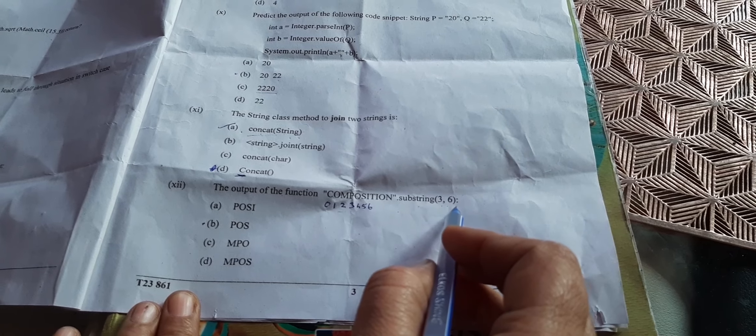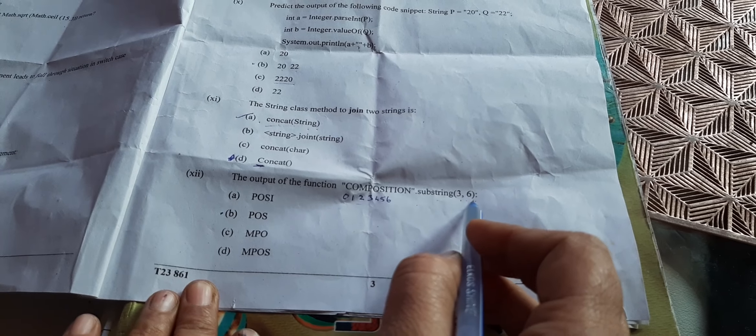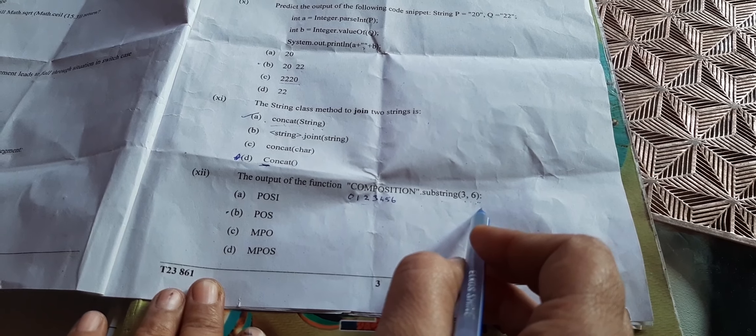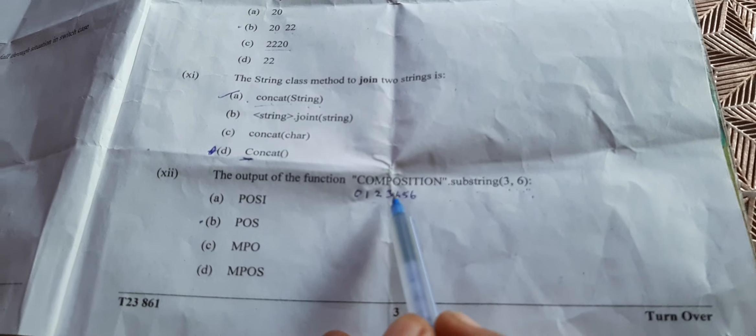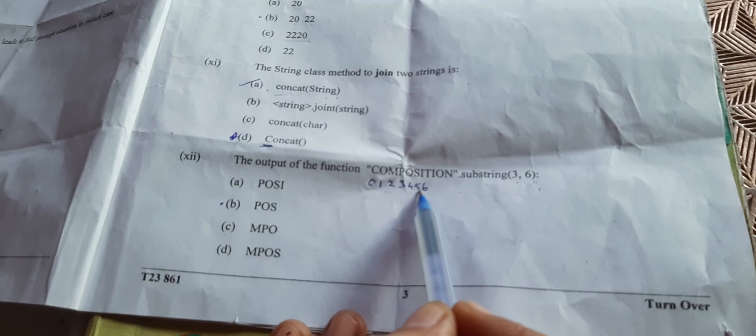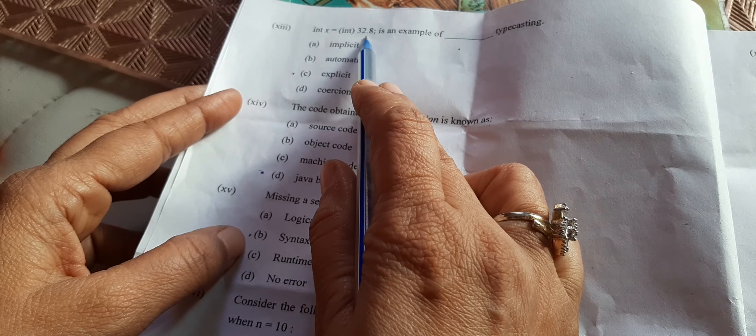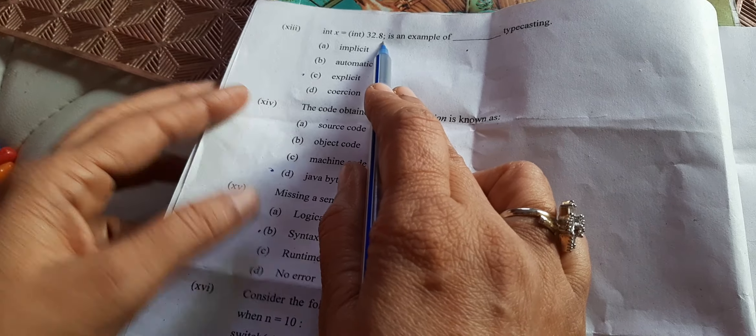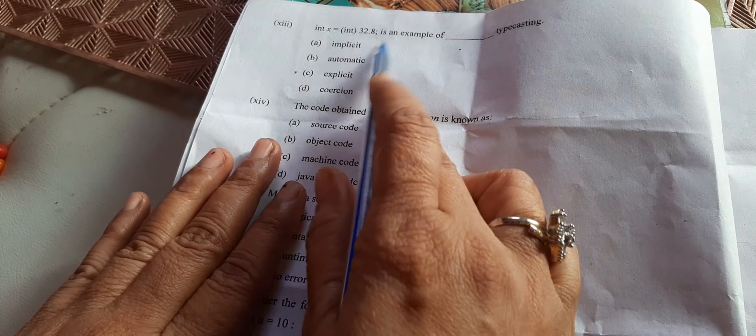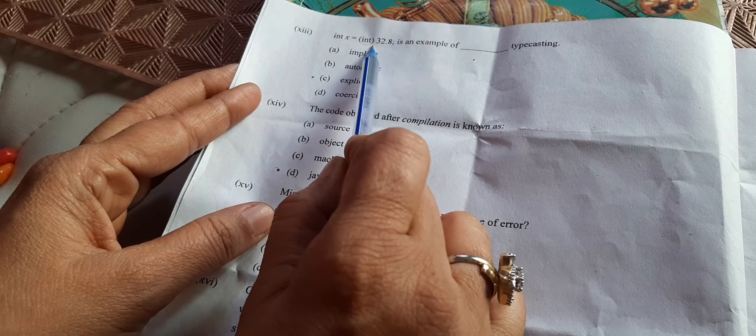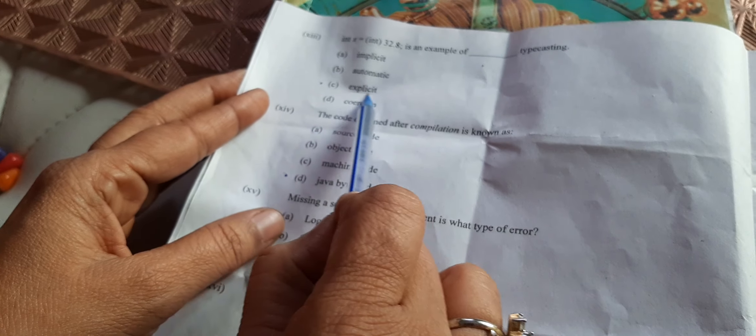The output of the function substring(3,6). We have given the index third till 6, but we will not go till 6, minus 1. So it will start from third index, it will go till 5, so the answer will be 'pos'. Next question: int x = (int)32.8. It is a type of type conversion we have learned - implicit and explicit. Forcefully we are converting it into integer type, so it will be explicit.